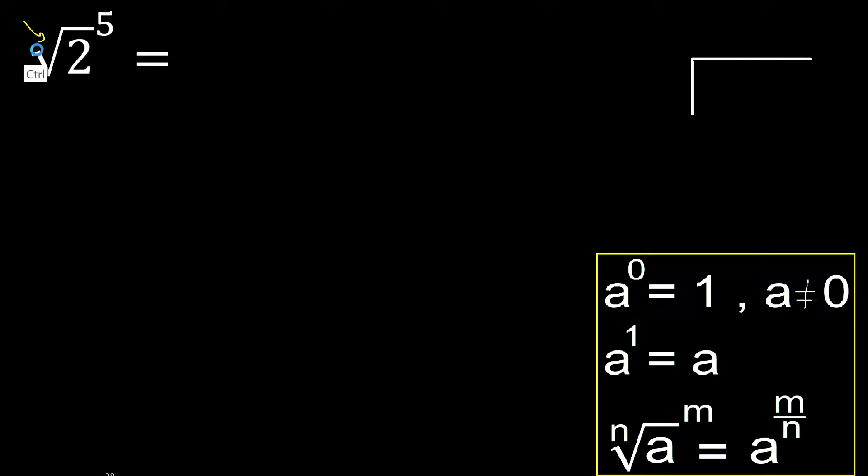Here, there is no number, therefore is 2. 5 is greater, and 5 cannot be divided by 2 exact, therefore divided.